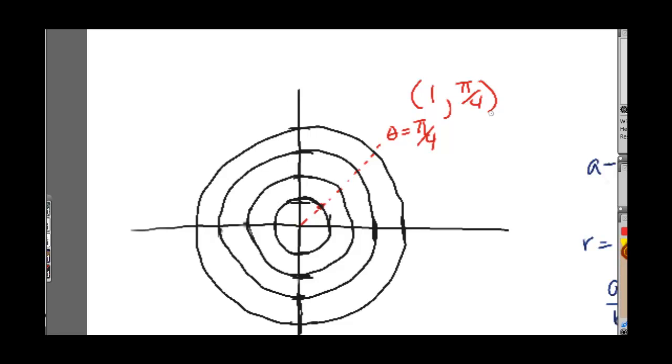The point 2 comma 2 pi over 3, 2 pi over 3 is a reference angle of 60 degrees in the second quadrant. Go back and review your trig if you need to. But you would go 2 up and there's your point because that's theta equals 2 pi over 3.